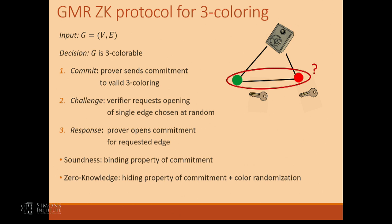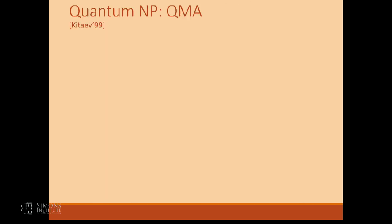Before doing that, I have to tell you a little bit about the kind of problems that we're going to try to verify in a zero-knowledge way. That's the class QMA — it's the quantum version of NP, introduced in the late 90s by Kitaev. Let's first remind ourselves what NP is.